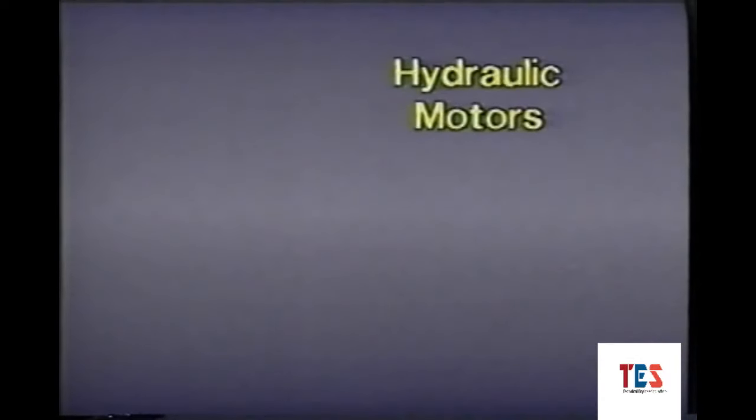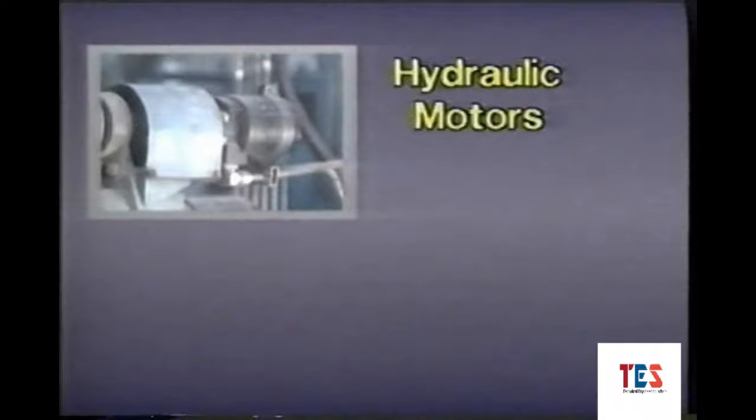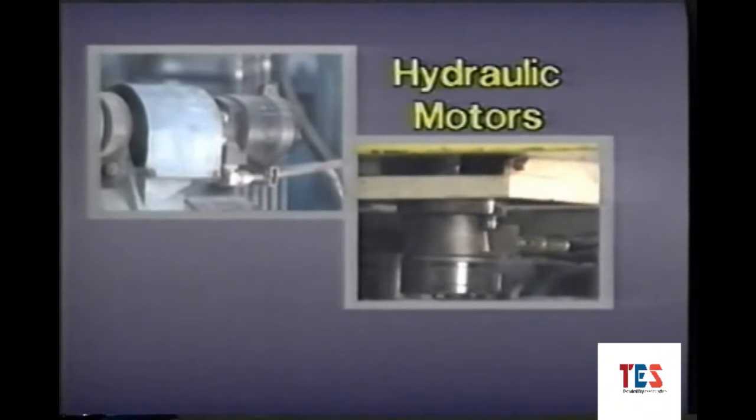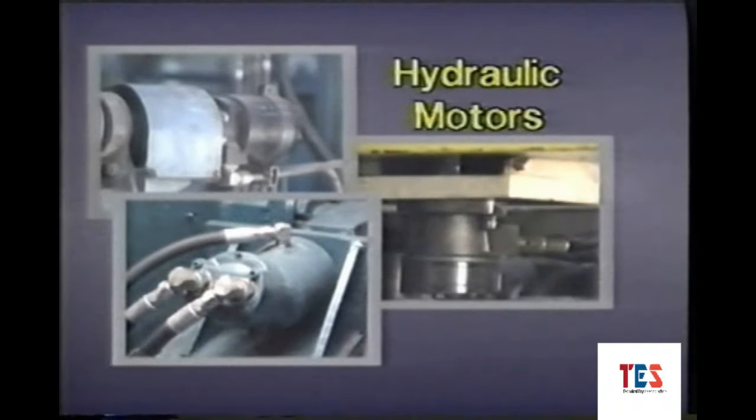Three types of motors are commonly used in industrial hydraulic systems: the vane motor, the gear motor, and the piston motor. While each of these motors looks similar to its counterpart pump, each operates on a principle exactly opposite of the pump.